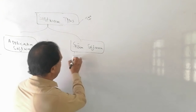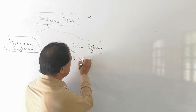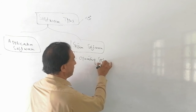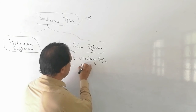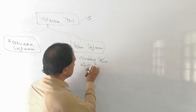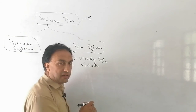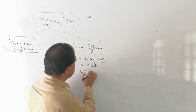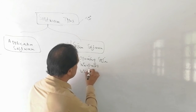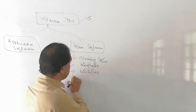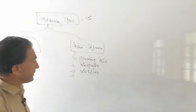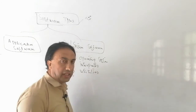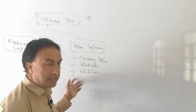System software manages all computer resources, processes user commands, and gives output. Examples of system software include the operating system, interpreter, and utilities.